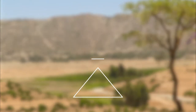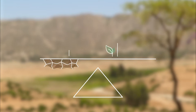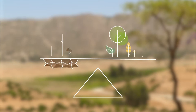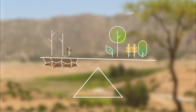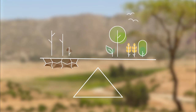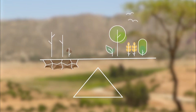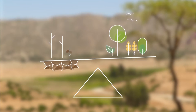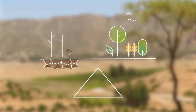La neutralité en matière de dégradation des terres, abrégée en NDT, décrit un monde dans lequel aucune terre n'est perdue à cause de la dégradation. Pour y parvenir, il est essentiel de planifier avec prévoyance, l'objectif étant d'éviter toute dégradation.